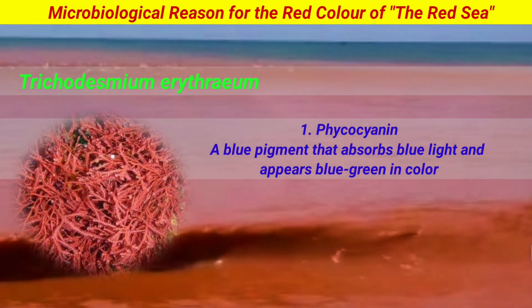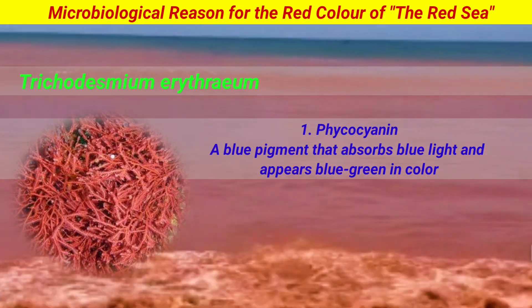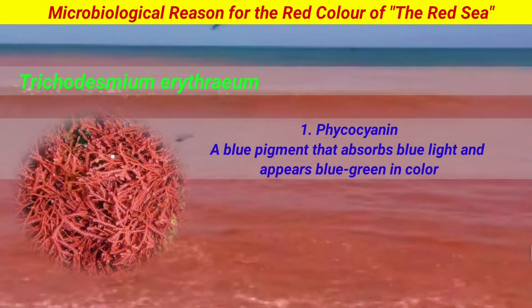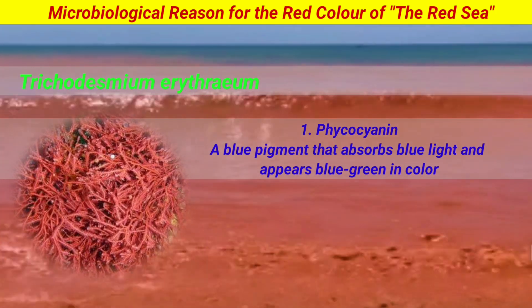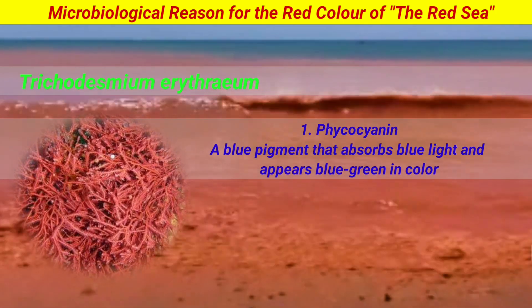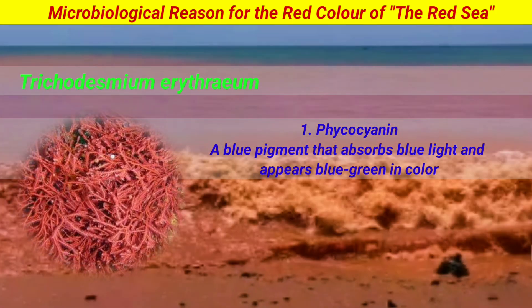Phycocyanin is a blue pigment found in Trichodesmium erythraeum and other cyanobacteria. It absorbs blue light and appears blue-green in color.